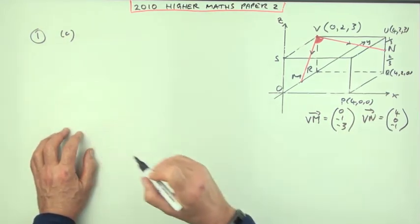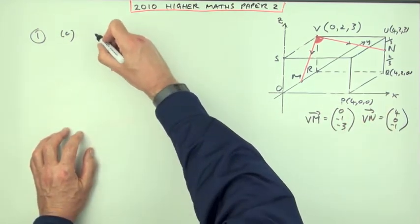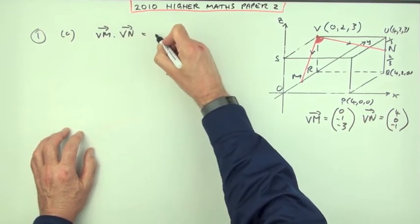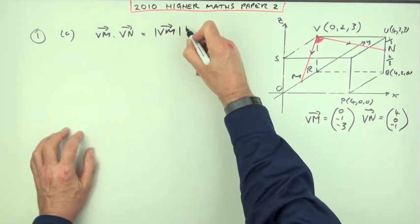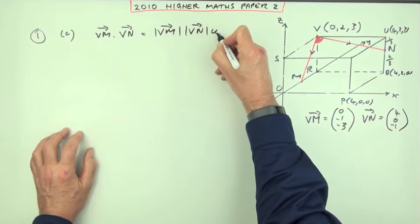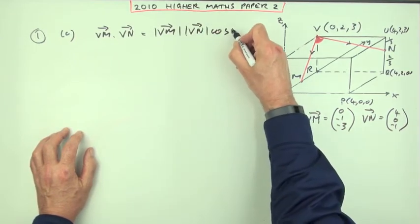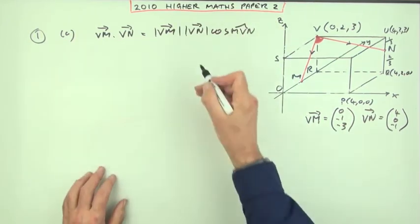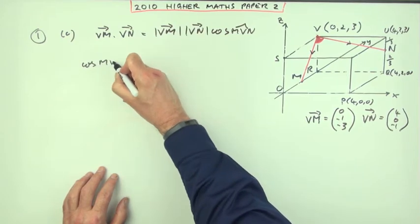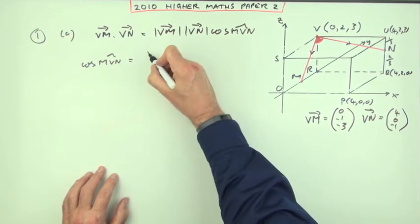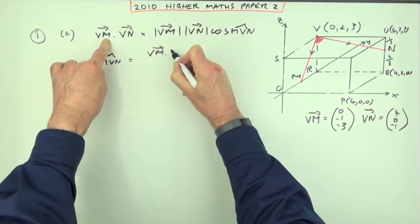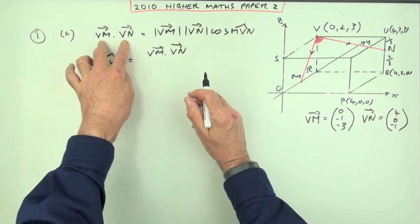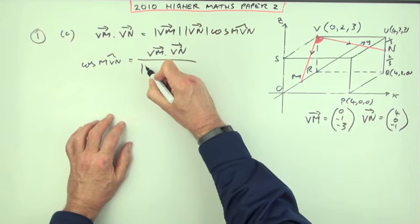Then you can either just jump straight in with the cosine of the angle or write out the scalar product. The scalar product of VM and VN would be the magnitude of VM times the magnitude of VN times the cosine of the angle between them, which is the angle M, V, N. No marks. The first mark comes for writing the cosine part down. The cosine of M, V, N would be the scalar product.